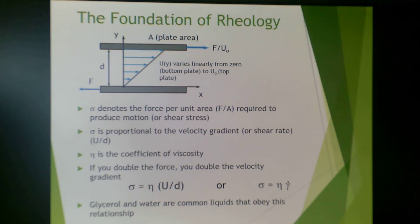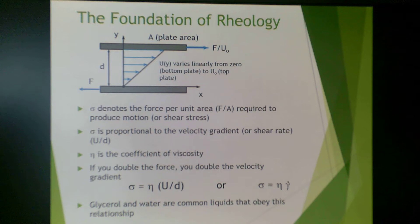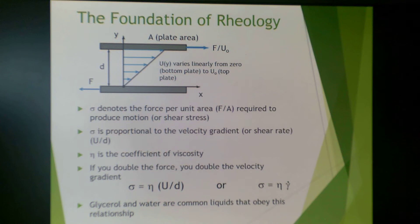Here we have a simple Newtonian system. Sigma denotes the force per unit area (F over A) required to produce motion — in this case, shear stress. Sigma is proportional to the velocity gradient or shear rate, which is u over d, the distance between the plates. Eta is the viscosity of the liquid. So sigma equals eta times u over d, or sigma equals eta times gamma. This is the common relationship between shear stress and shear rate. Liquids that obey this relationship, such as water and glycerol, are known as Newtonian fluids.